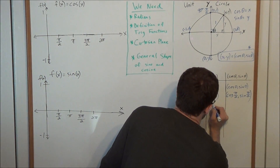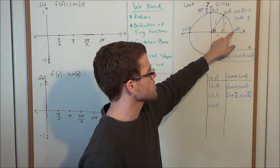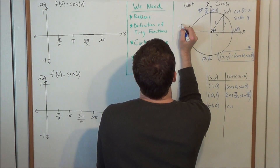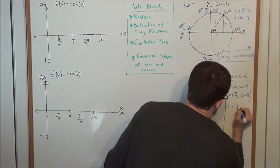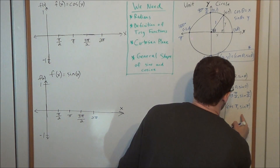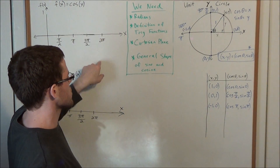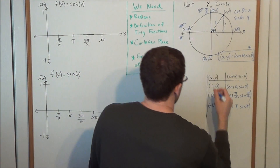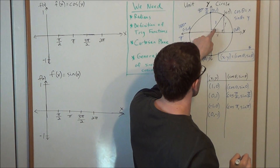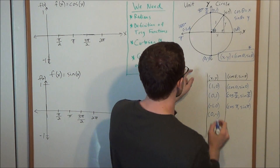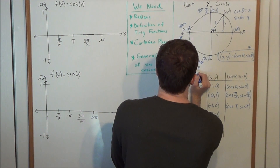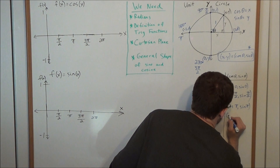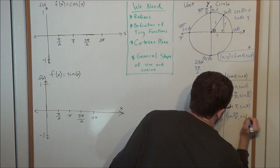Next we look at the point negative 1, 0. We extend out a radius of 1 and spin 180 degrees, which is also pi radians, so we're looking at cosine pi, sine pi. And for the point 0, negative 1, we extend out 1 and spin 270 degrees, which in radians is 3 pi over 2. This tells us that the point 0, negative 1 corresponds to cosine of 3 pi over 2, sine of 3 pi over 2.